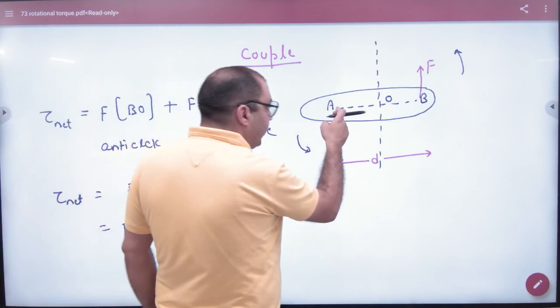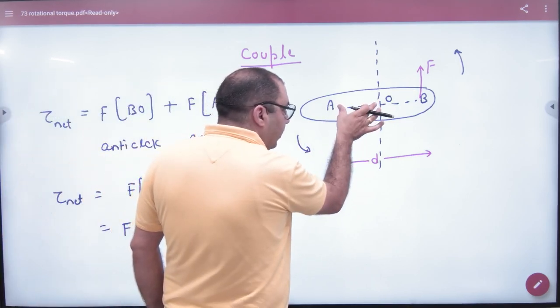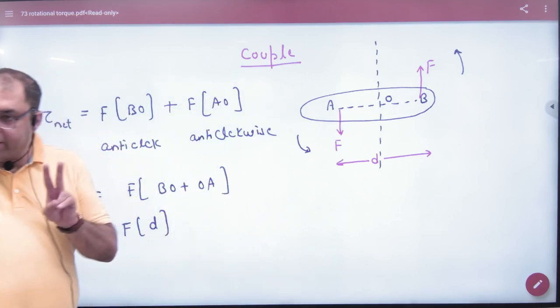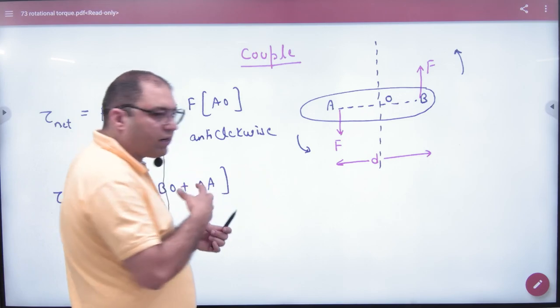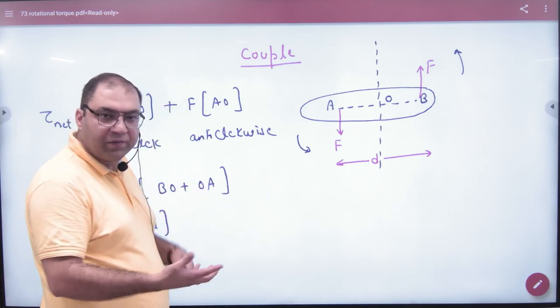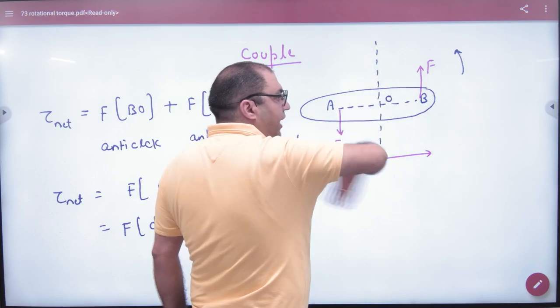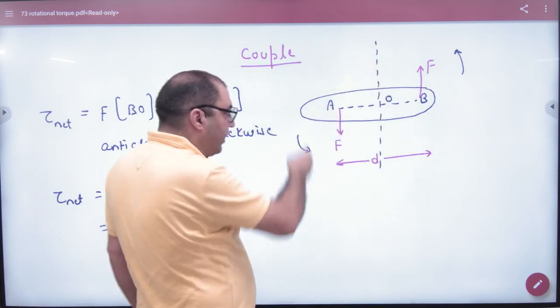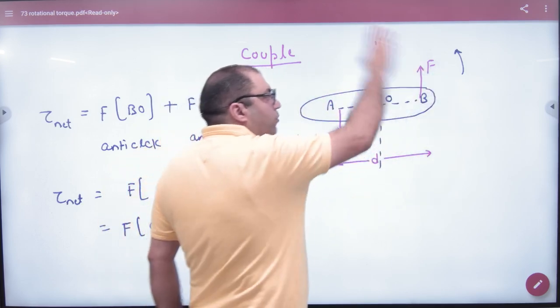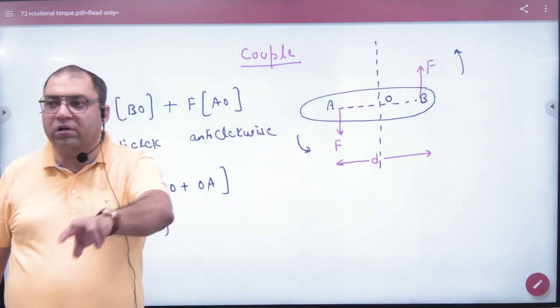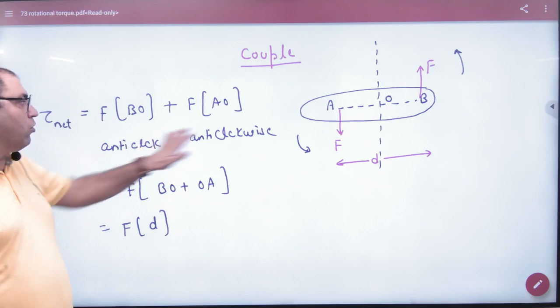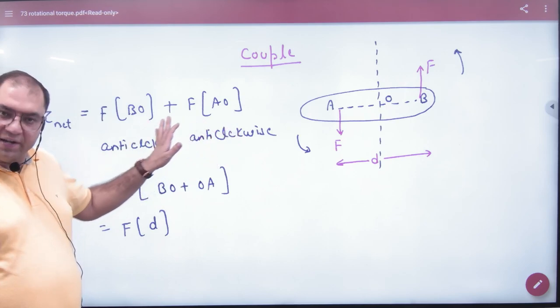And what torque will F into AO generate? So two torques generate here. Now how to think about it - add it or subtract for net torque? If this force is here, the body will be anti-clockwise. And if this force is here, the body will be anti-clockwise. So anti-clockwise, anti-clockwise torque. For net torque, what will we do? We will add them.